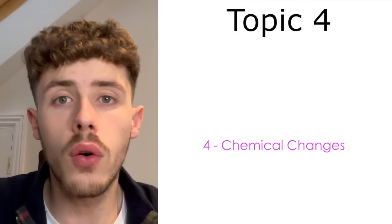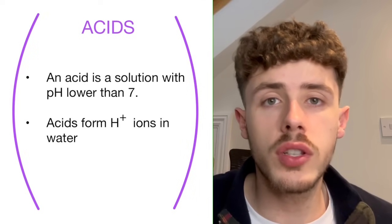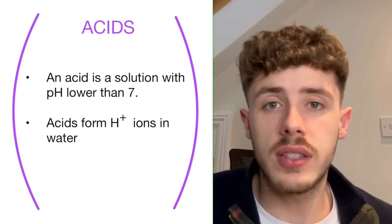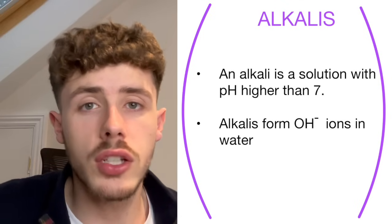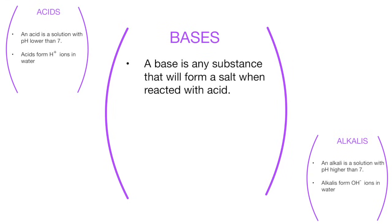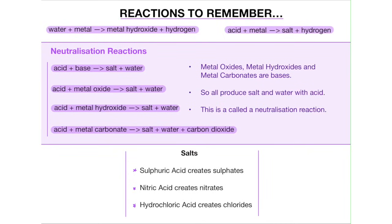Topic number 4 is chemical changes. You need to know the difference between acids and bases. An acid is a substance that forms a solution with a pH less than 7. An alkali is a substance that forms a solution with a pH greater than 7. This is not the same thing as a base, as a base is a substance that reacts with an acid to form a salt. From this, there is a whole series of chemical equations that you need to be familiar with the products of if you get tested on them.